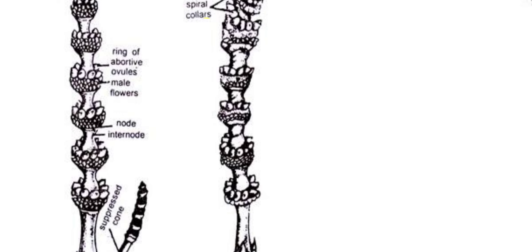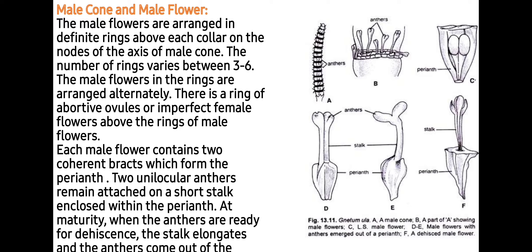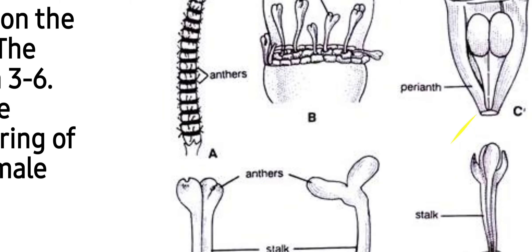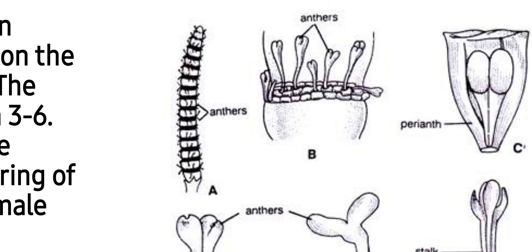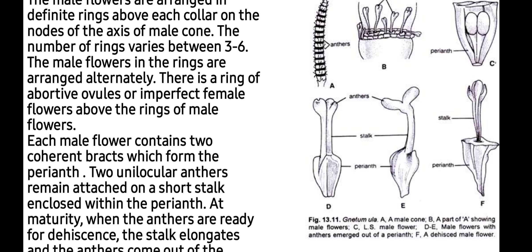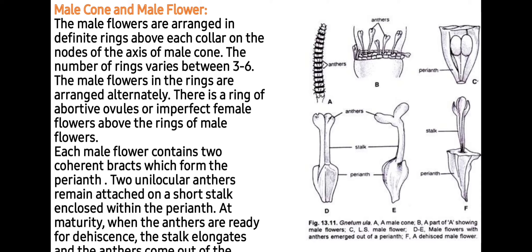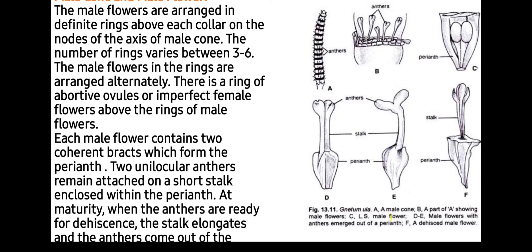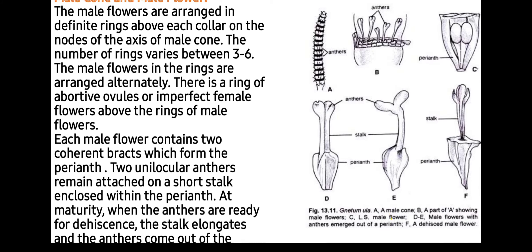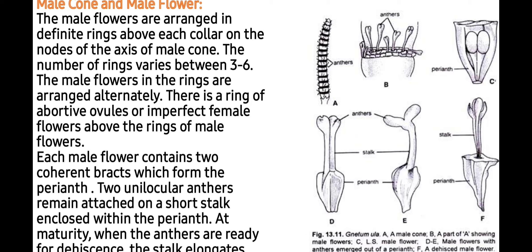The number of rings varies between 3 to 6. The male flowers in the rings are arranged alternately. There is a ring of abortive ovules or imperfect female flowers above the ring of male flowers. Each male flower contains 2 coherent bracts which form the perianth. Two unilocular anthers remain attached on a short stalk and are enclosed within the perianth. At maturity, when the anthers are ready for dehiscence, the stalk elongates and the anthers come out of the perianth.